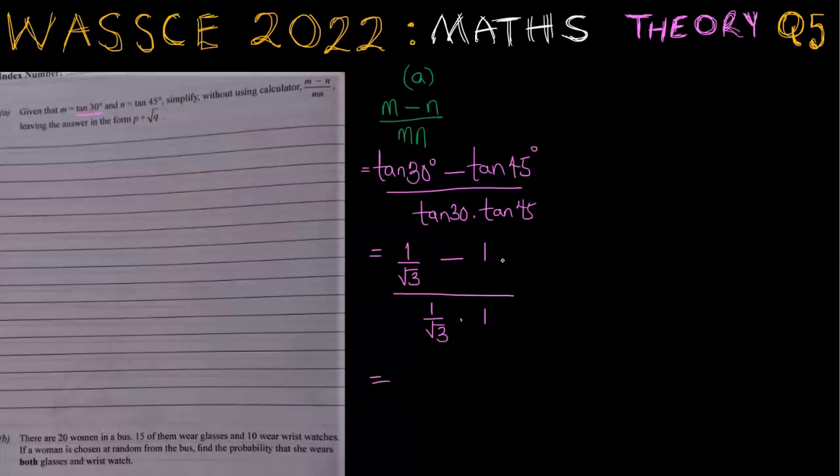Here, I'm going to have to take 1 from 1 over root 3. That can be done quite easily because 1 can be written as root 3 over root 3. My intention is to make the denominators the same. So since the denominators are the same, I'm just going to subtract the numerators. And at the denominator, I've got 1 over root 3 times 1. That's just 1 over root 3.